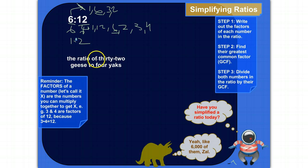All right, let's do another one. It's the ratio of 32 geese to 4 yaks. So, step 1, I would say, or let's say step 0, because I already have a step 1 here, is write it out in mathematical notation. So, we could do 32 and a little colon, which says it's a ratio of 32 to 4.